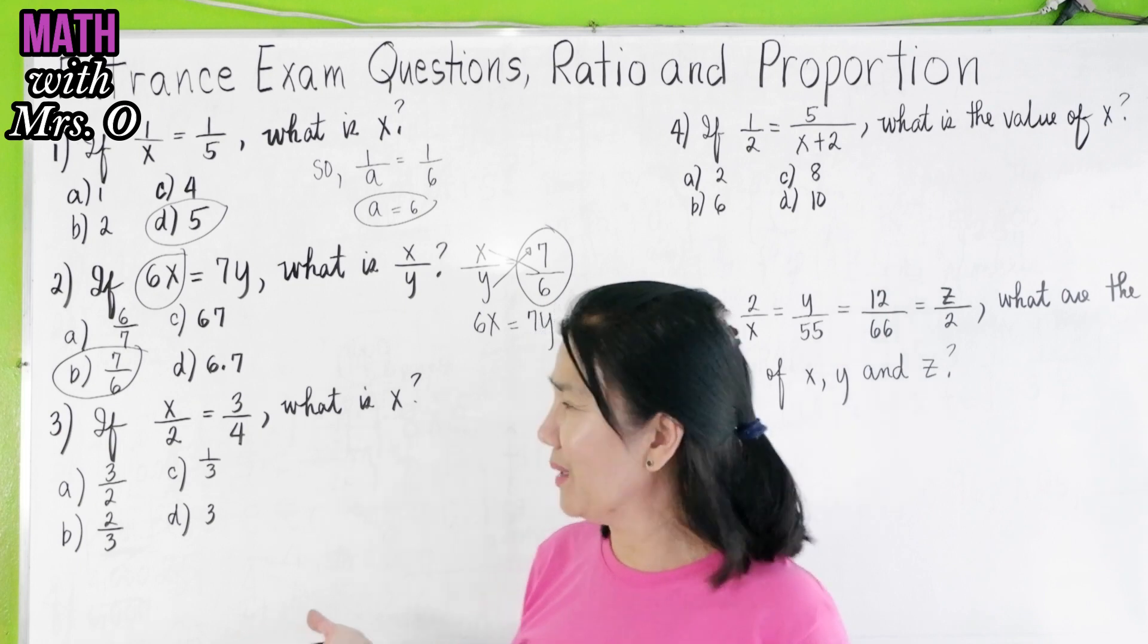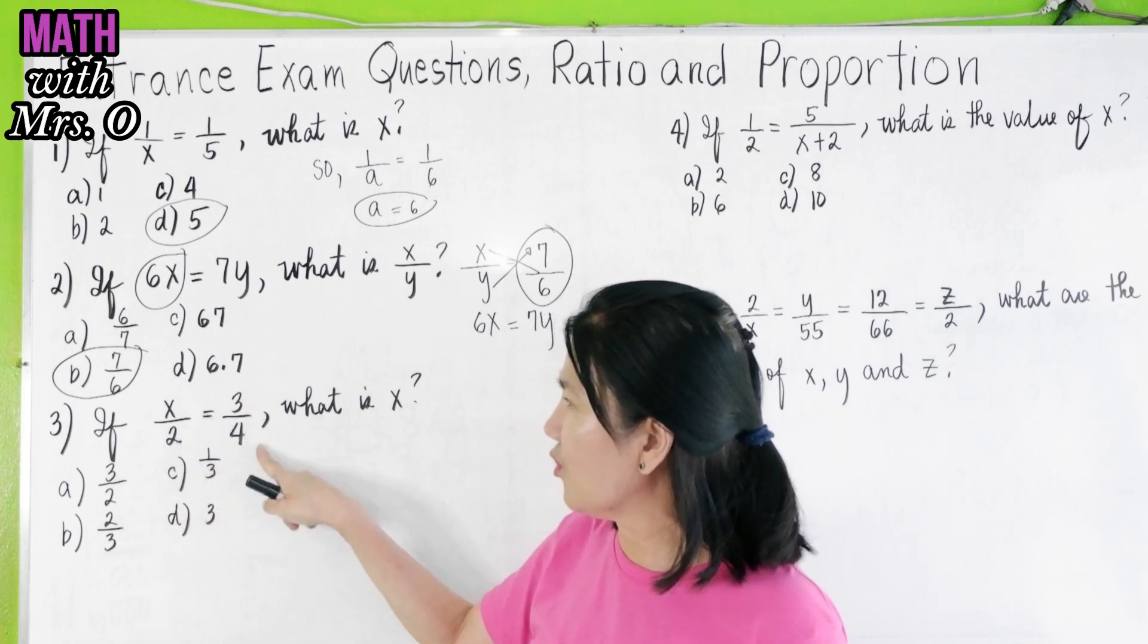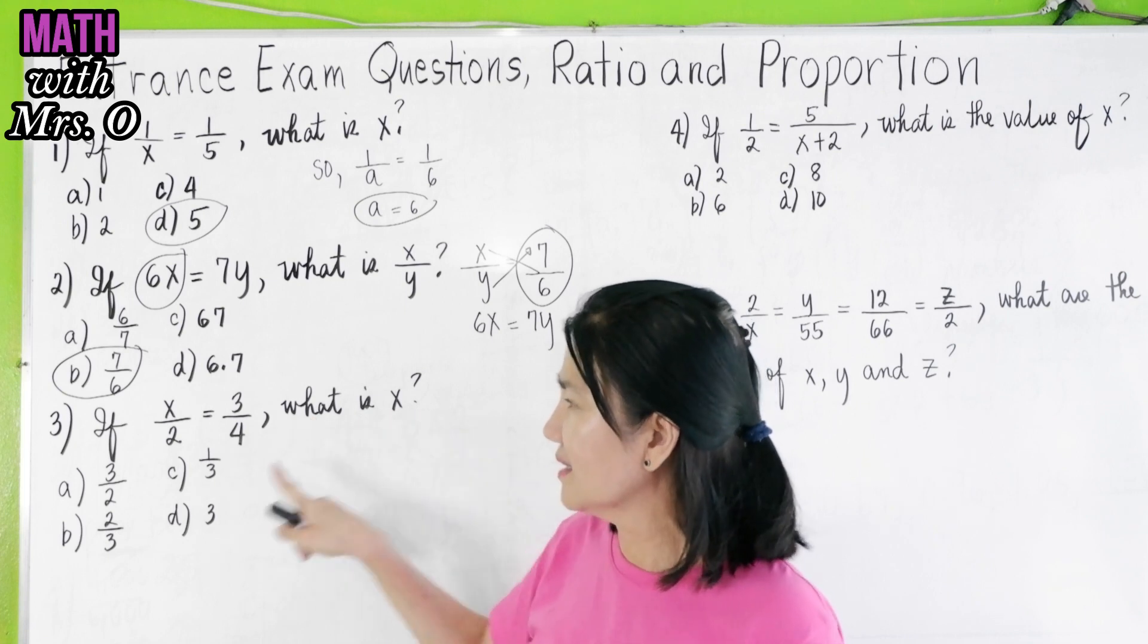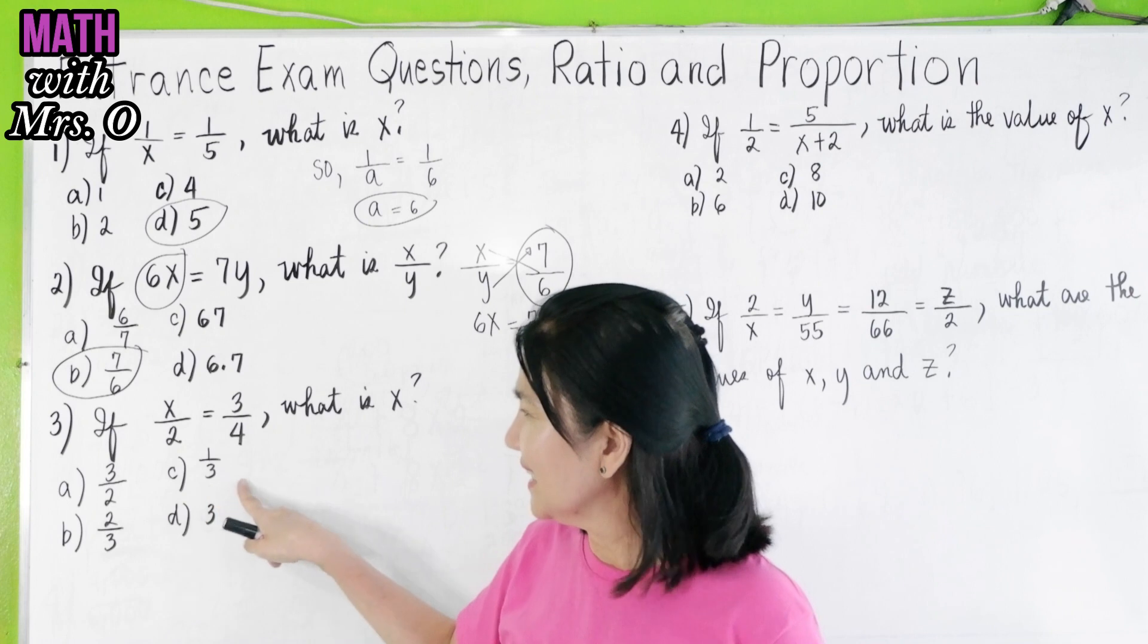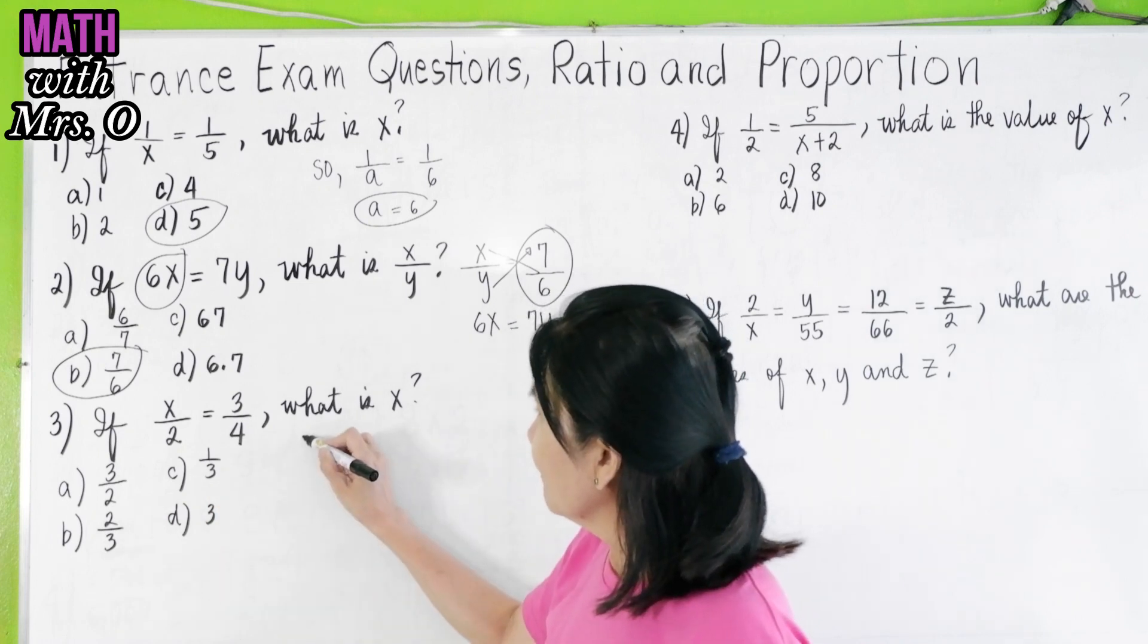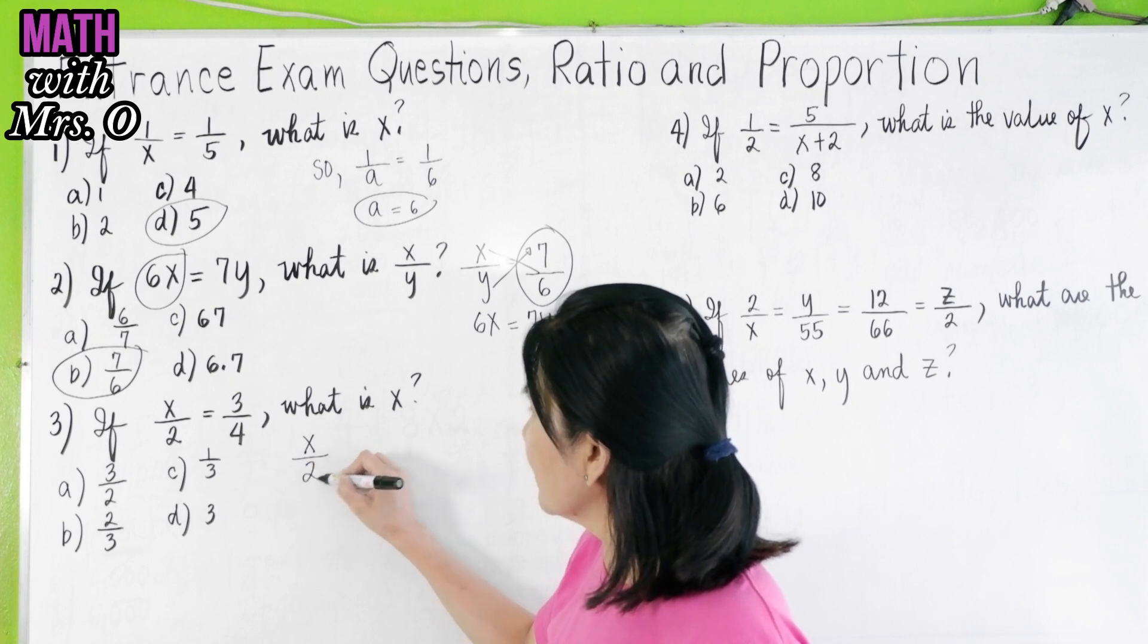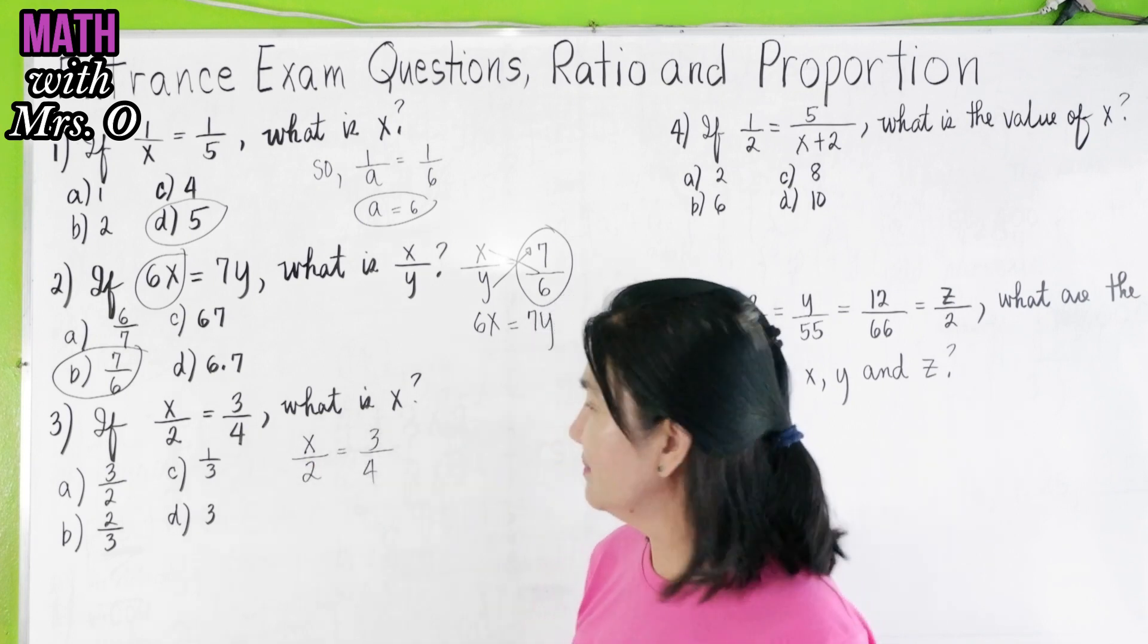Proceed to problem number 3. If x over 2 equals 3 fourths, what is x? Letter a, 3 halves. Letter b, 2 thirds. Letter c, 1 third. And letter d, 3. Now, if you're solving problems like this, all you have to do is to cross multiply. It's the easiest.